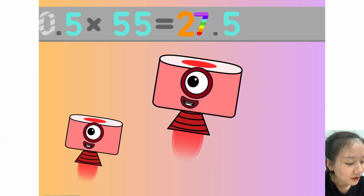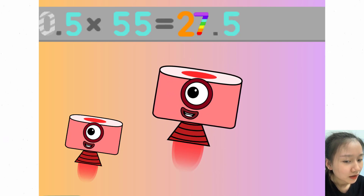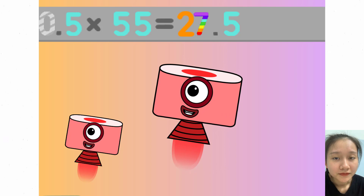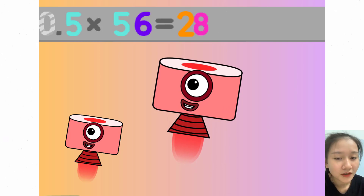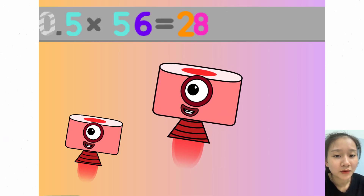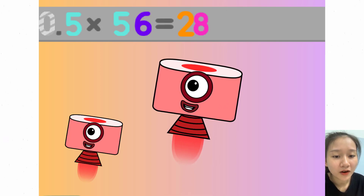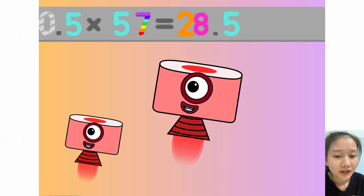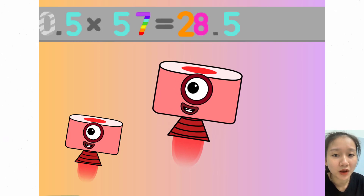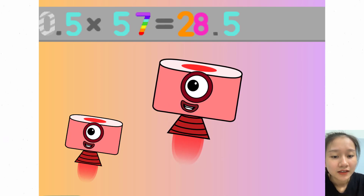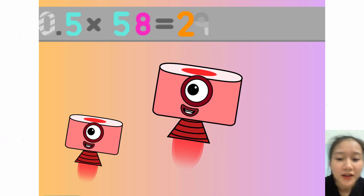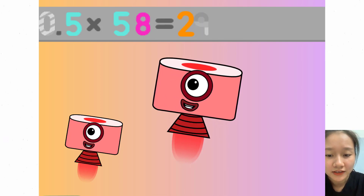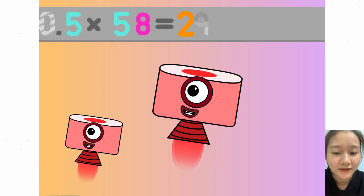0.5 times 55 equals 27.5. 0.5 times 56 equals 28. 0.5 times 57 equals 28.5. 0.5 times 58 equals 29.